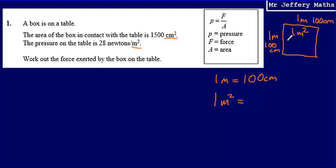And so that would actually be 10,000 centimetres squared. So the conversion here, the conversion between one metre squared to centimetres squared is actually 10,000 centimetres squared.